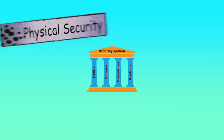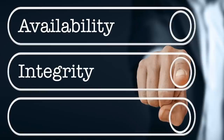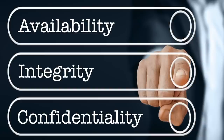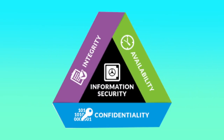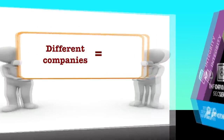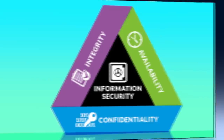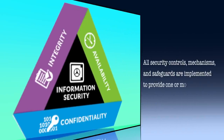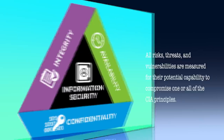Together they provide solutions for physical security, computer security and network security. The three fundamental principles of security are availability, integrity and confidentiality, commonly referred to as the CIA triad, which forms the main objective of any security program. The level of security required differs per company based on its unique business and security goals. All risks, threats and vulnerabilities are measured for their potential capability to compromise one or all of the CIA principles.